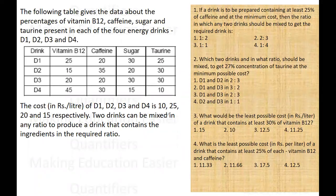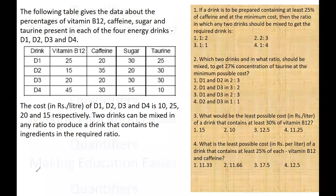The cost in rupees per litre for these four drinks is given: D1, D2, D3, D4 are 10 rupees, 25 rupees, 20 rupees, and 15 rupees respectively per litre. Two drinks can be mixed in any ratio to produce a drink that contains the ingredients in the required ratio. We have four questions to solve one by one.